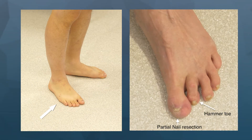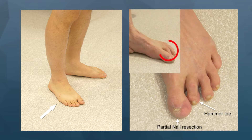Assess both legs, foot and ankle from the front, side, and back, initially in the standing position, asking your patient to turn sequentially. Assess anteriorly looking for scars, skin changes, symmetry, hallux valgus or other toe deformities, calluses, or swelling of the ankle. In this example, you can see a partial nail resection and hammer toe.